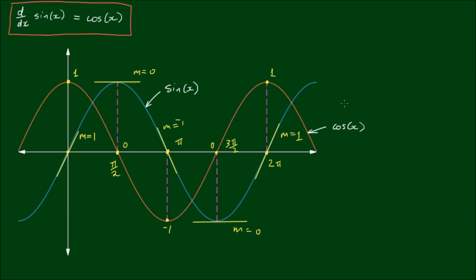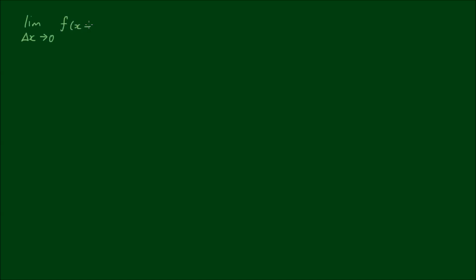But unfortunately in mathematics, inferring is not good enough — we actually have to show proof, and that's what we're setting out to do in this video. So let's go back to first principles, to the definition of the derivative, which is the limit as Δx approaches zero of f(x + Δx) minus f(x), all over Δx. This expression is by definition the derivative of the function f(x).